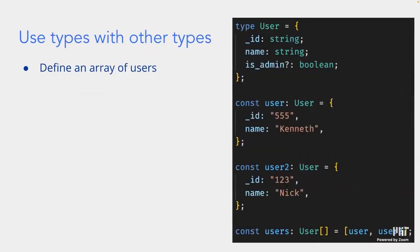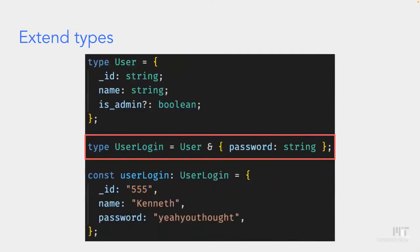We can put types within types — define a second user `nick` and then create an array of users using `Array<User>`, putting `user` and `user2` in the array without any complaints from TypeScript. We can also extend types: if we have a predefined `User` type and want to extend it with a `password` field, we create `type UserLogin = User & { password: string }`. Now `UserLogin` has all properties of `User` plus `password`.